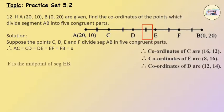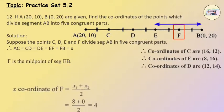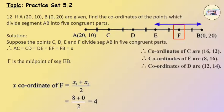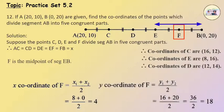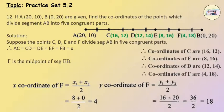F is the midpoint of segment EB. The x-coordinate of F equals x1 plus x2 upon 2, which equals 8 plus 0 upon 2, which equals 4. The y-coordinate of F equals y1 plus y2 upon 2, which equals 16 plus 20 upon 2, which equals 36 upon 2, which equals 18. Therefore, the coordinates of F are (4, 18). The coordinates of the points dividing segment AB into 5 congruent parts are C(16, 12), D(12, 14), E(8, 16) and F(4, 18).